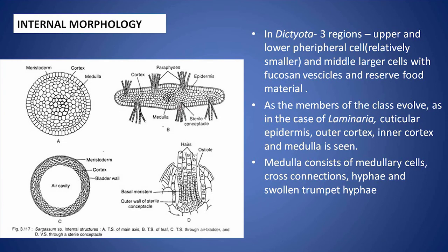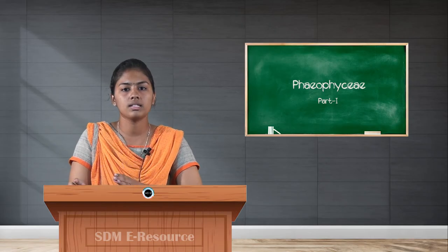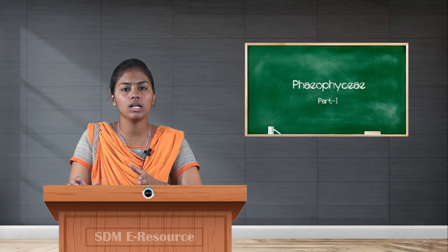In the middle region of the thallus, you can find the fucosan vesicles and reserve food materials, which are called middle larger cells because they are comparatively larger in size.